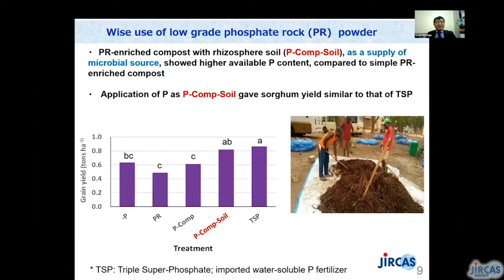As mentioned earlier, phosphate rock powder is not widely used. However, one way of usage is mixing it during compost production — namely, phosphate rock-enriched compost. Our colleague found that phosphate rock-enriched compost with rhizosphere soil (P-compost soil) as a supply of microbial source showed higher available phosphorus content compared to simple phosphate rock-enriched compost. Application of this P-compost soil gave sorghum yield similar to that of triple superphosphate. Farmers can do it easily without any cost.